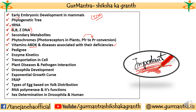Pedigree par bhi question aaya tha, joki kaafi saare students ko thoda sa tough laga. Enzyme kinetics par questions were there. Transportation mechanism par bhi question tha, co-transporter related, mediated transportation se relevant question aaya tha. Plant disease and pathogen interaction. Drosophila development, like mutations ki case thi, nanos gene ke baare mein jo description tha, is par question aaya tha.